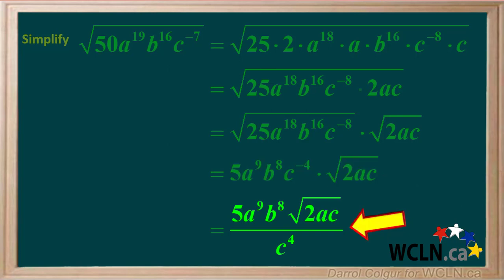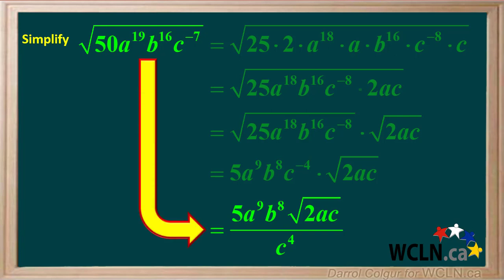Now we're left with this expression. So we can state that the square root of 50a to the 19th b to the 16th c to the negative 7th can be simplified to 5a to the 9th b to the 8th times the square root of 2ac, all over c to the power 4.